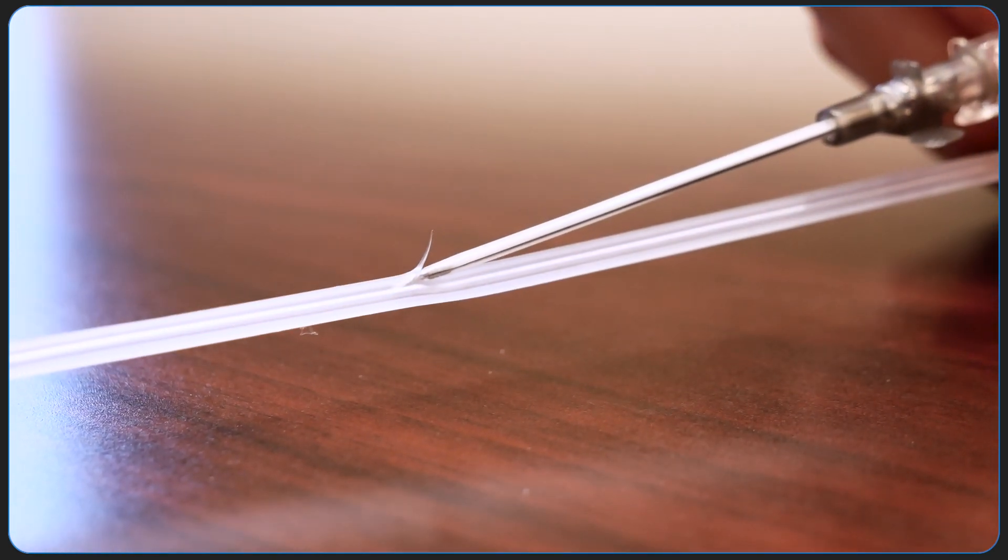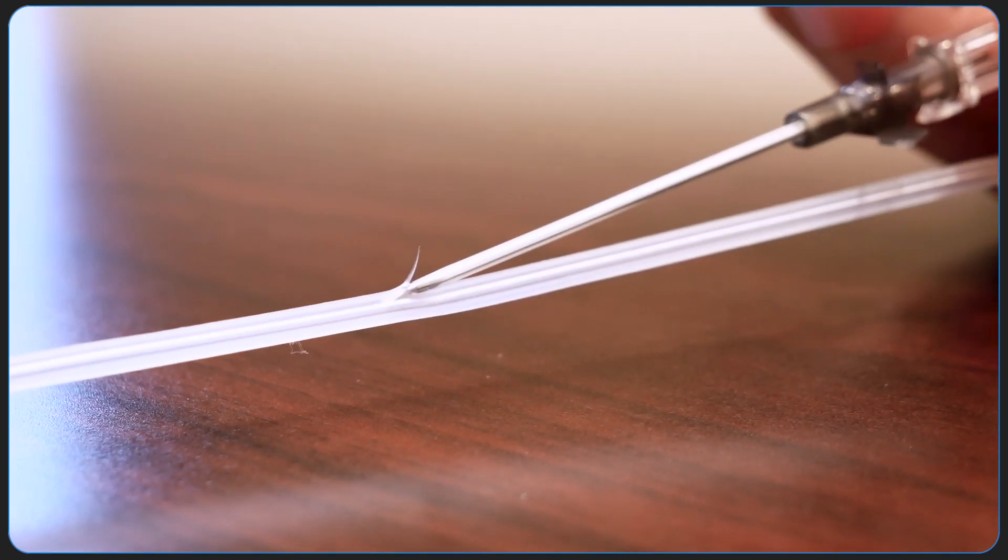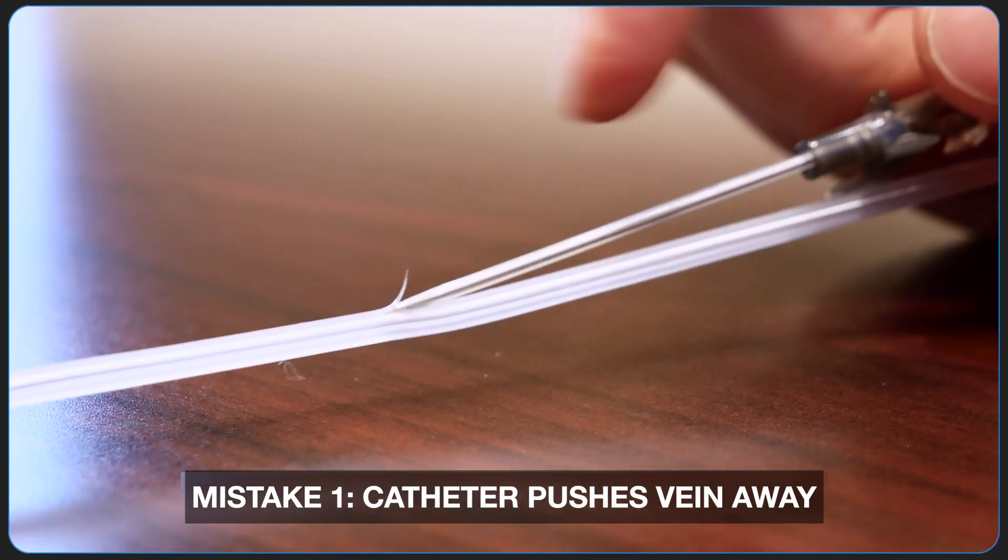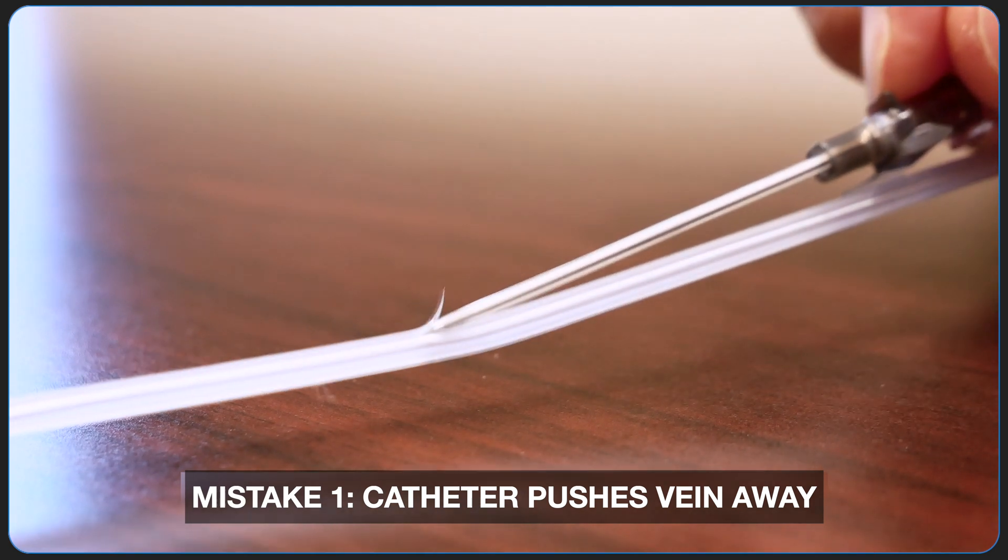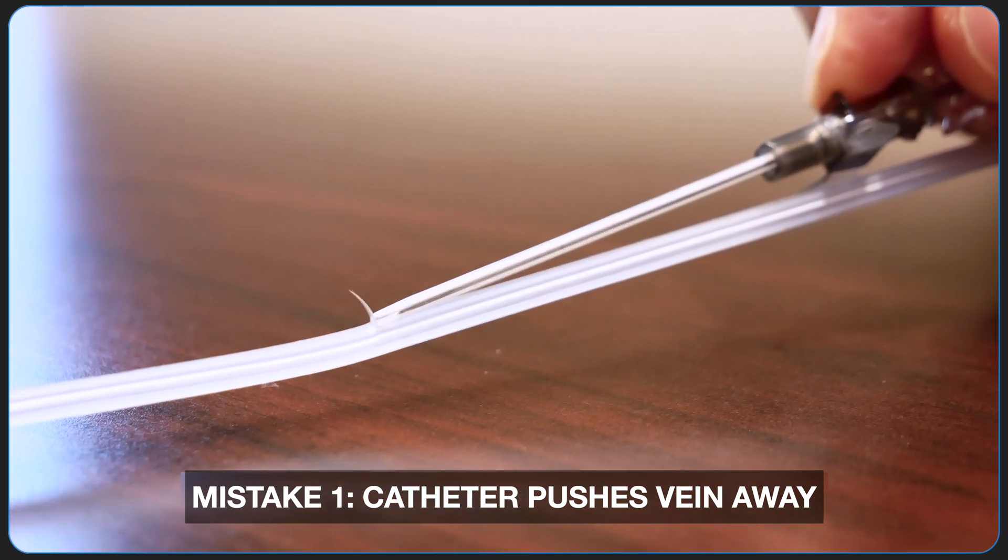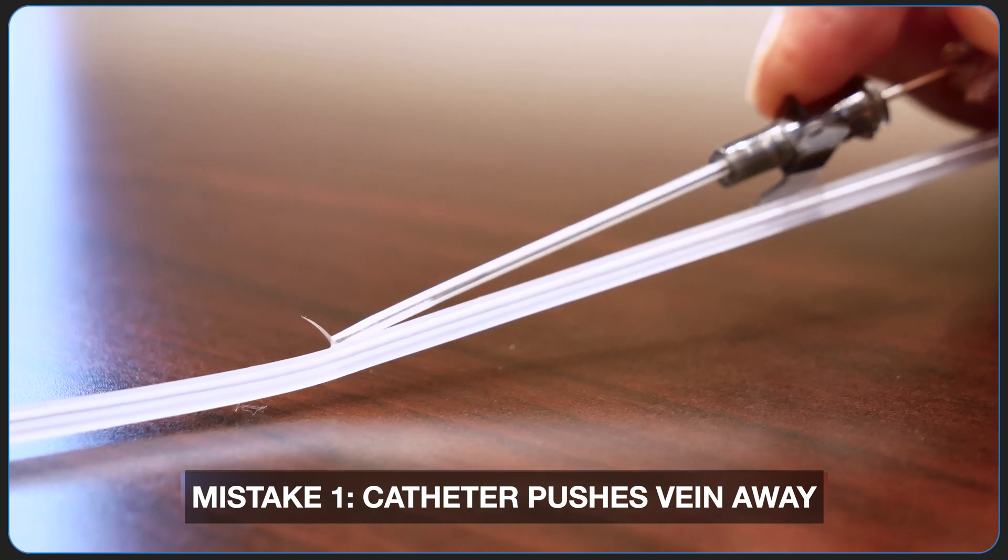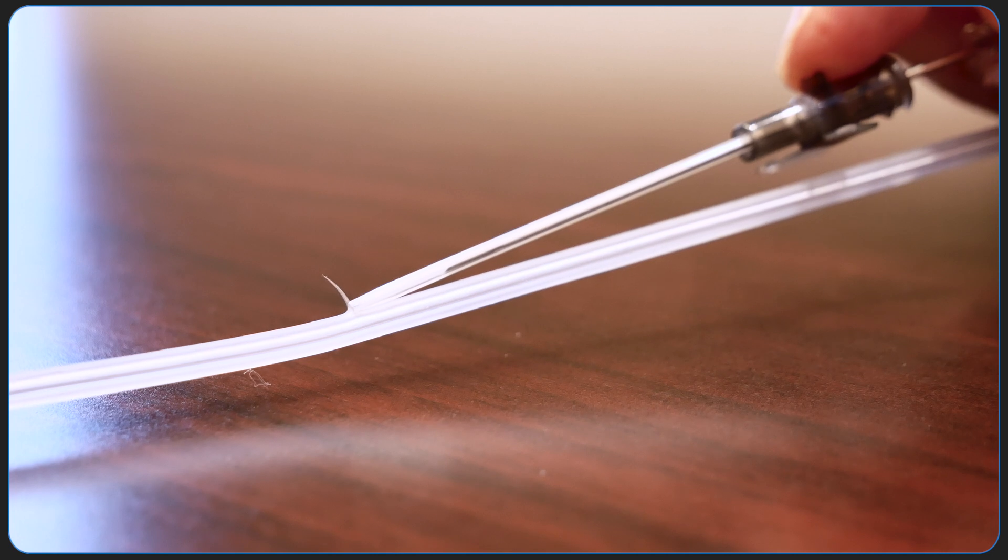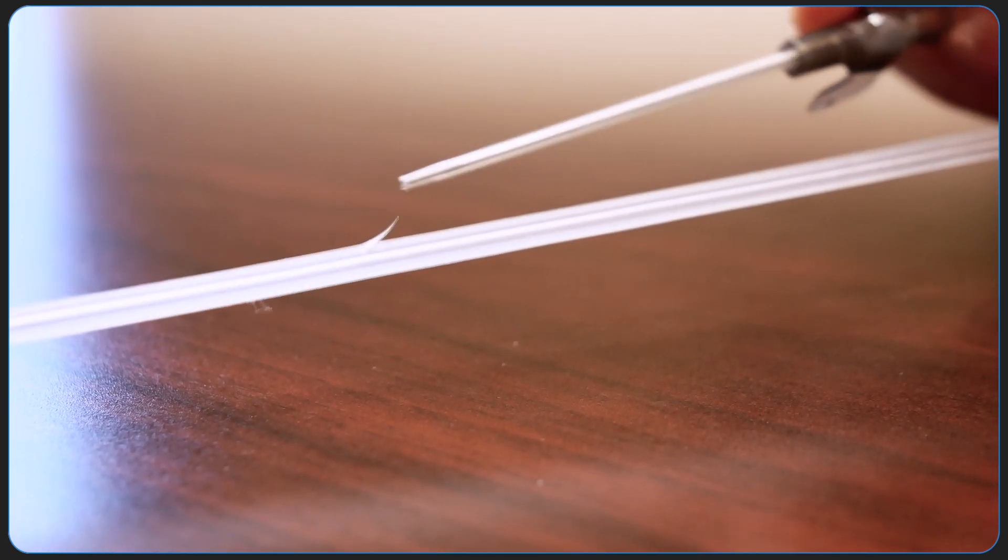So you nudge in to get your flash and now here's where people make one of two mistakes. Either they try to push the catheter off the needle now but because the bevel is not entirely in the vein if you try to do that you're just going to push it away. Your needle's coming out, your catheter is not advancing into the vein. This is going to be a blown IV. So that's mistake one.